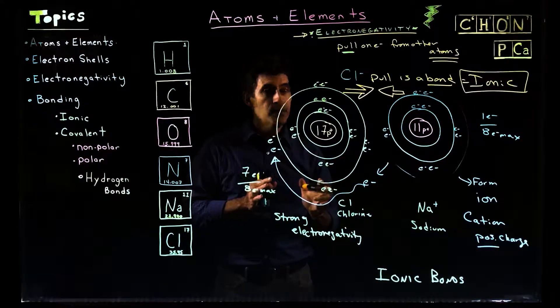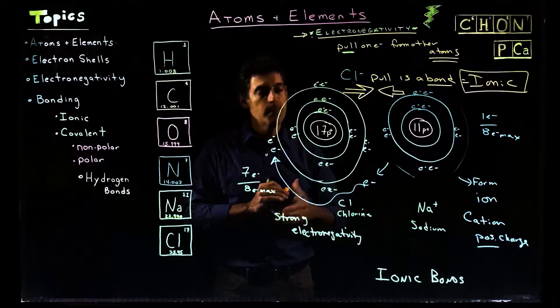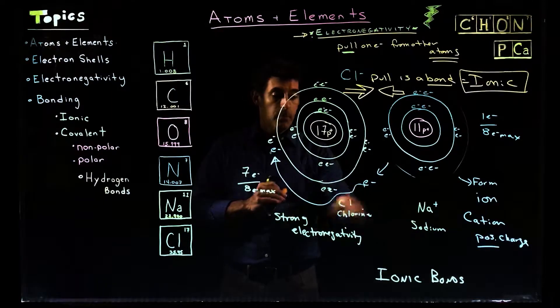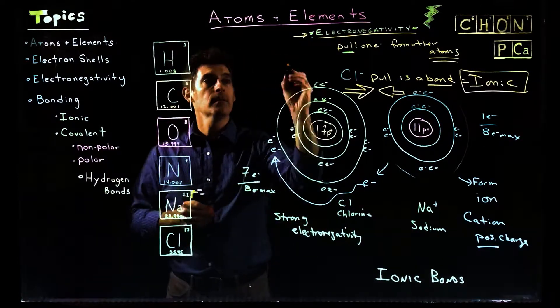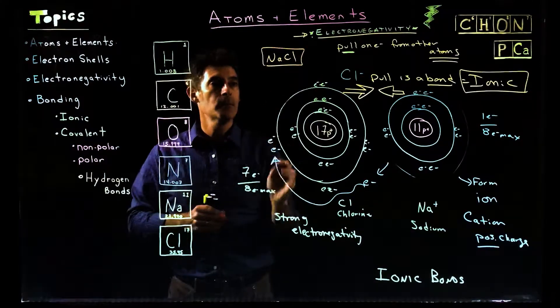Ionic bonds, you may learn in a chemistry class, can be very strong. They can be very strong bonds. It could be among the strongest of all the chemical bonds, that pull. What do we have here? This is NaCl, right? Or salt, sodium chloride.